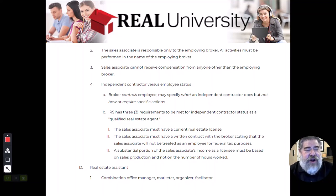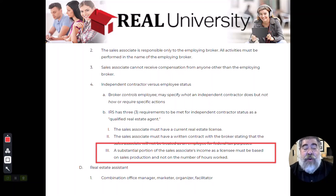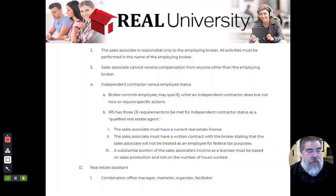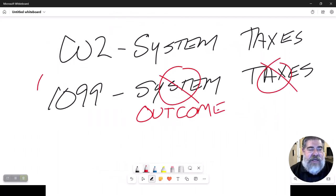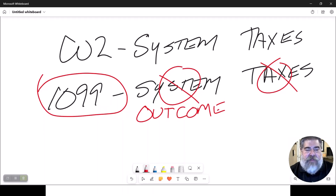And the third thing here is confusing. A substantial portion of your income as a licensee must be based on the sales production and not the number of hours worked. All right. Clear as mud. So let me explain this. What they are saying is this, because you are a 1099, you get paid based on the outcome of a deal.